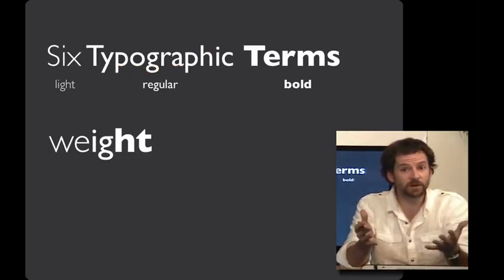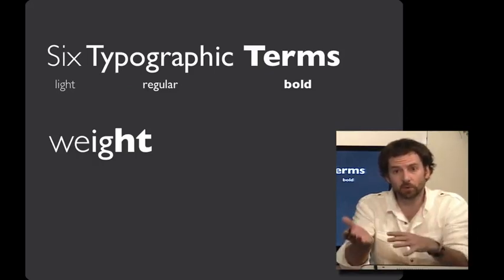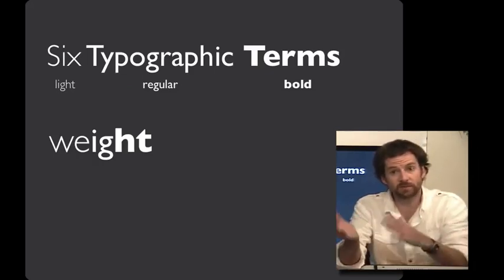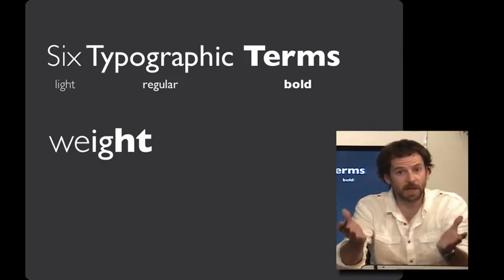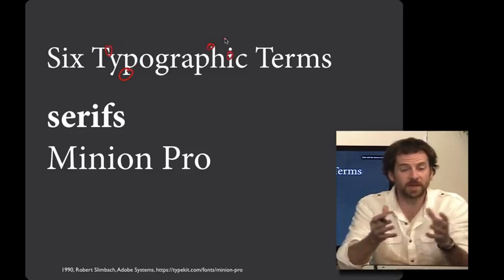Typefaces can also vary in their weight. So here we have an example of light on the left, regular or Roman in the middle and bold on the right. Sometimes you'll see weights in between like demi-bold or semi-bold and even further to the right of bold you'll see black. Number six on our list is serifs. Serifs are the doohickeys at the ends of letters that give them that chiseled look.